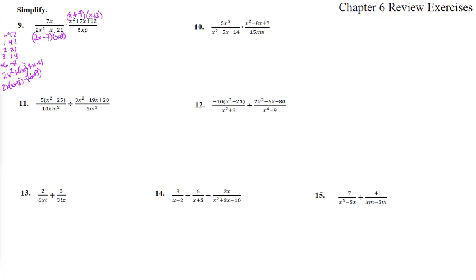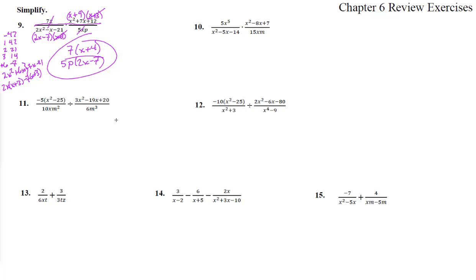Multiplying just moves them all together, so we cancel what's the same: x plus 3 cancels, and x cancels. We're left with 7 times x plus 4 on top, and on the bottom we have a 5 and the 2x minus 7. That's number 9.